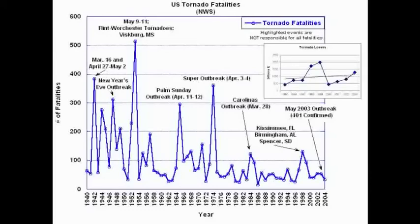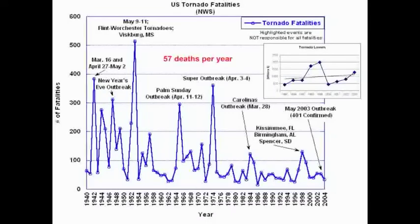This chart shows the number of fatalities from 1940 to 2004 directly blamed on tornadoes. There have been some major outbreaks — on New Year's Eve, on Palm Sunday, the Super Outbreak of 1974 with 148 tornadoes in a single day, and the May 2003 outbreak with over 500 confirmed tornadoes. On average, there are 57 deaths per year in the United States blamed on tornadoes, ranking second among all severe weather events over the last 30 years, second only to flooding.